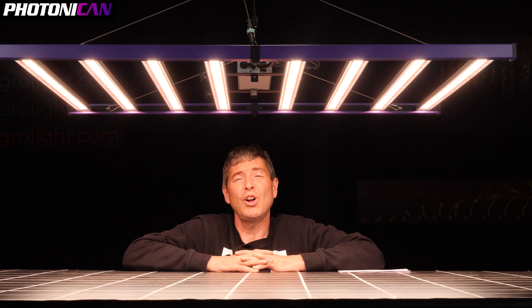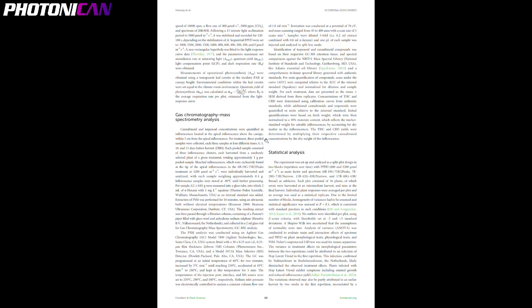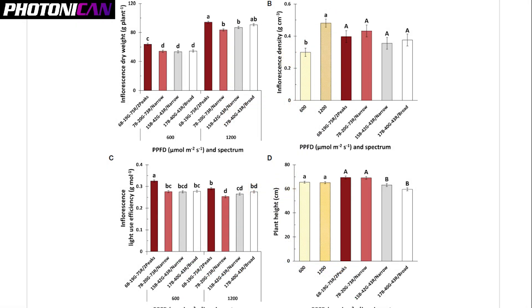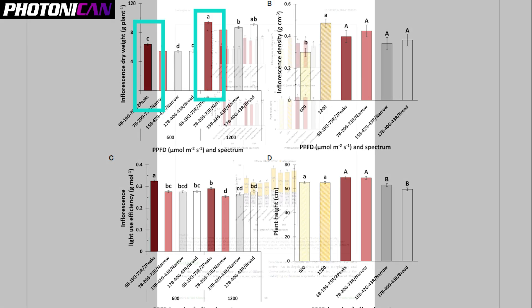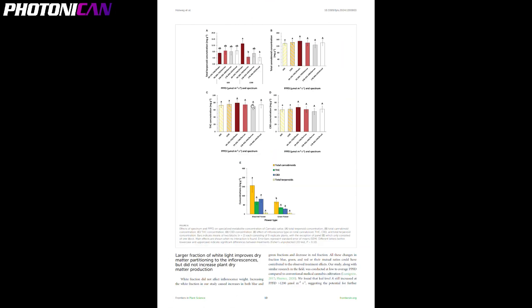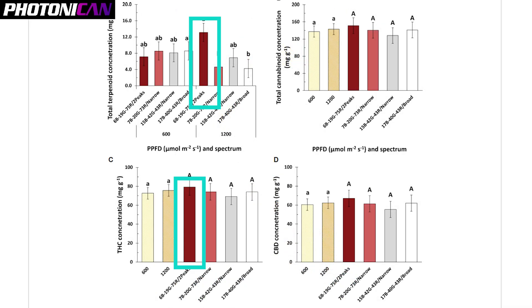Interestingly, in pretty much all the criteria—in terms of mass harvested per plant, in terms of CBD concentration and terpenoid levels—they all showed a significant increase under this spectrum that was used.